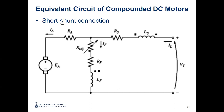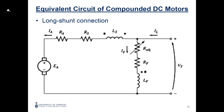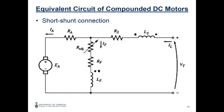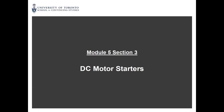For the compounded configuration, if you put the series first and then the shunt, we call it the long shunt. If you put the shunt first and then the series, we call it the short shunt. By default, if an exam problem says compounded without specifying, assume it's the long shunt connection. We stopped here last time; today we're going to finish with DC motor starting.